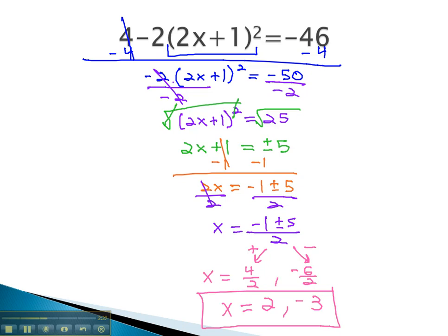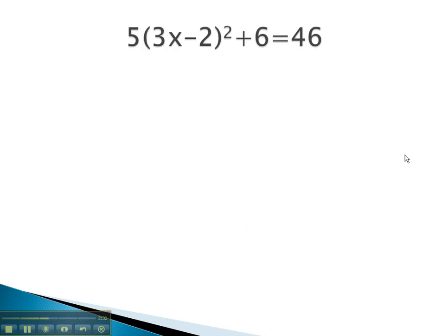Let's try another example, where we have to isolate the part with the exponent before we can get rid of the exponent. Again, in this problem, to get the part with the exponent alone, we'll start by subtracting 6 from both sides.